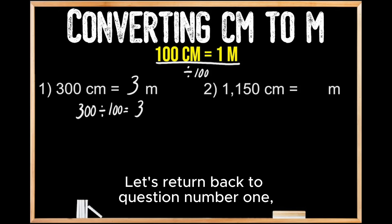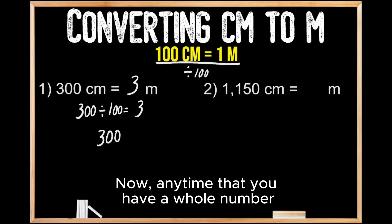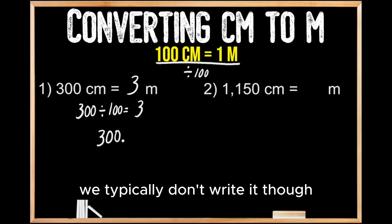Let's return back to question number one, where we started out with 300 centimeters. Now, any time that you have a whole number, there is a decimal to the right of that whole number. We typically don't write it, though, because it's usually not necessary.